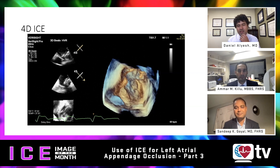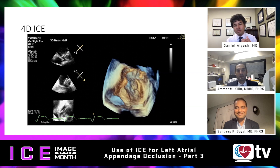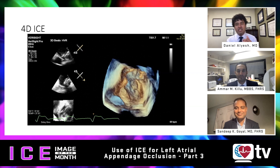To summarize what we learned this episode: TEE versus ICE — both are great imaging modalities, but ICE adds the ability to have a single operator, reduce general anesthesia, and improve efficiency. You can obtain multiple ICE views to assess the appendage from multiple vantage points. You can do troubleshooting for both types of devices. The future looks really bright for 4D ICE as long as it becomes affordable. Thank you both for joining us, and thank you all for tuning in to the ICE Image of the Month on Heart Rhythm TV.